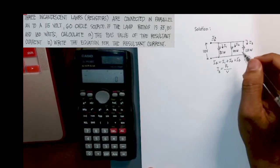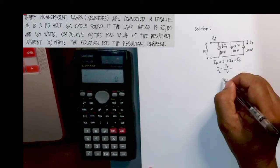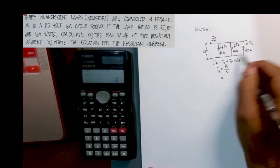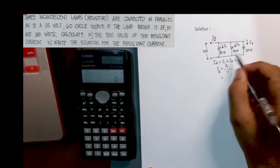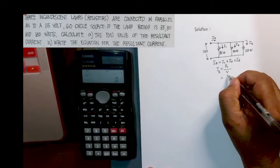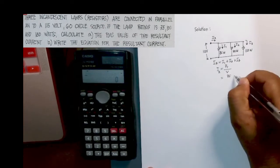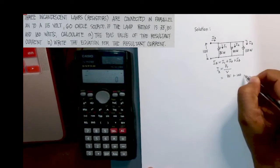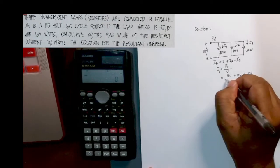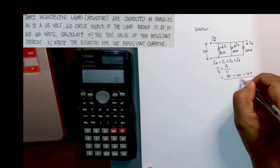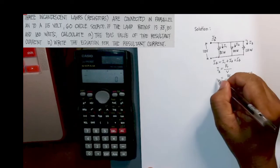So in this case in our problem, the total power is the addition of the individual power of the incandescent lamps. So you have here 75 watts plus 100 watts plus 150, and it is divided by 115. So this is i sub r.